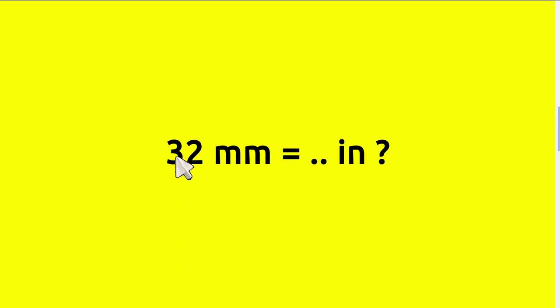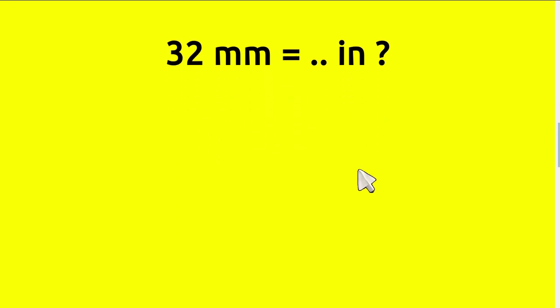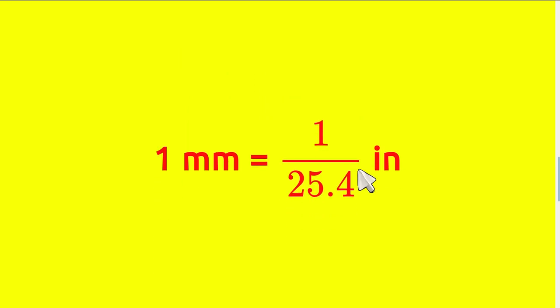The question is 32 millimeters equals how many inches. We need to know the formula of the conversion between millimeters to inches before we solve the problem.